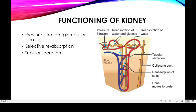The third step is tubular secretion. In tubular secretion, different ions, creatinine, and urea which are still present in the blood are secreted from the blood into the renal tubule filtrate, so that the normal pH of the blood can be maintained. If there are still salt or urea molecules remaining in the blood, they are secreted into the renal tubules in this last step to normalize blood pH.